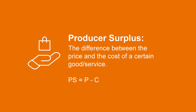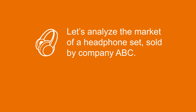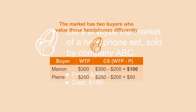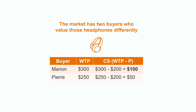Now let's do a practical example. Imagine that we are analyzing the market of headphones. In order to simplify, let's assume that we only have one company, ABC, which sells them at $200. Their cost of producing those headphones is $150 per unit. This market has only two consumers, Manon and Pierre. Manon wants to buy a pair of headphones that are Bluetooth, have good sound, and she would give them a lot of use, since she does running and takes long walks. She would be willing to pay $300 for them. Pierre also wants the same headphones and would use them a lot for podcast listening.